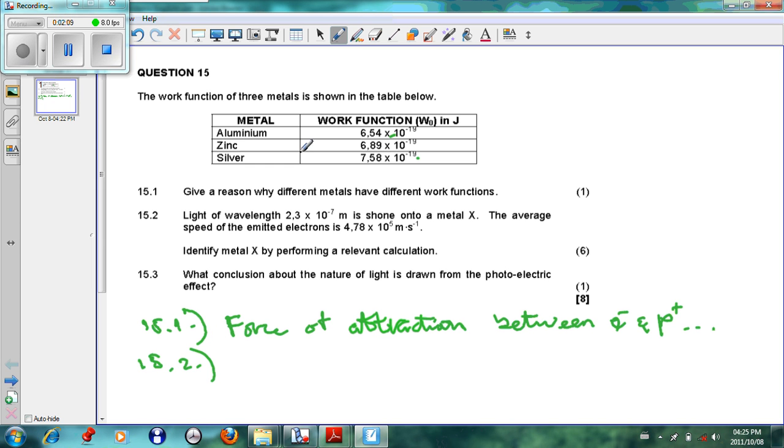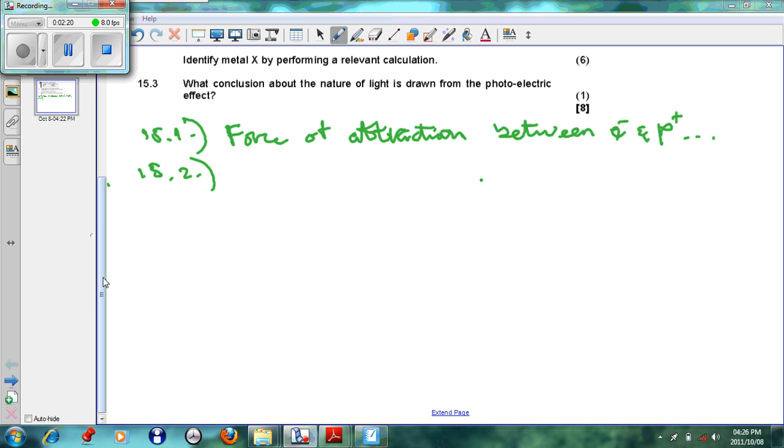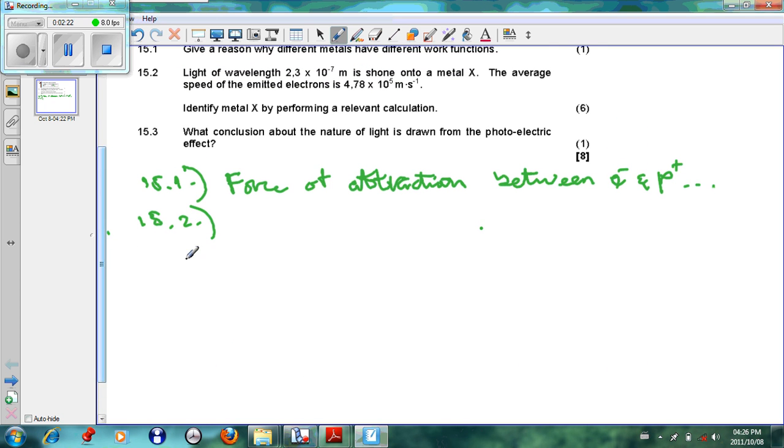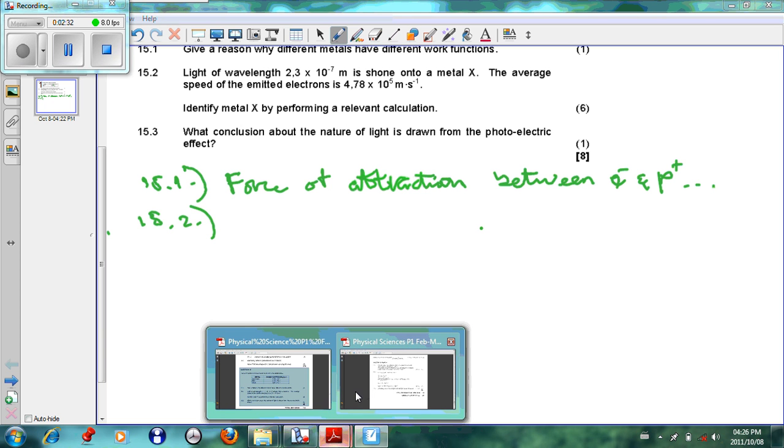Looking at this, we can see that what we can do is we'll have to calculate the work function and see what is the work function and compare it to this table and come to a conclusion. We see that the wavelength is given and the average speed is given, so we'll have to work out the work function.